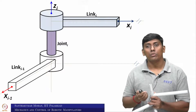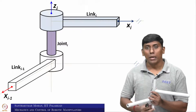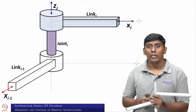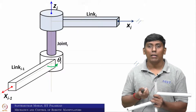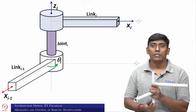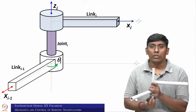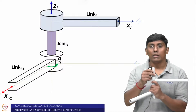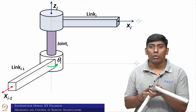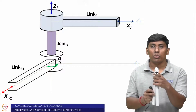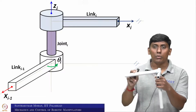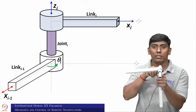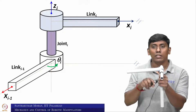The angle between x_i and x_{i-1} is what we call the joint angle. For that, we make a line parallel to x_i at link i minus 1 and draw it. The angle between these two is what you call the joint angle. You can assume these two are parallel, and now after rotation, you get theta_i — the joint angle referred with respect to the joint axis z_i.